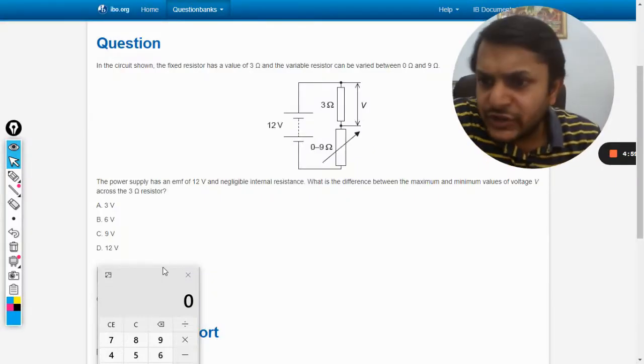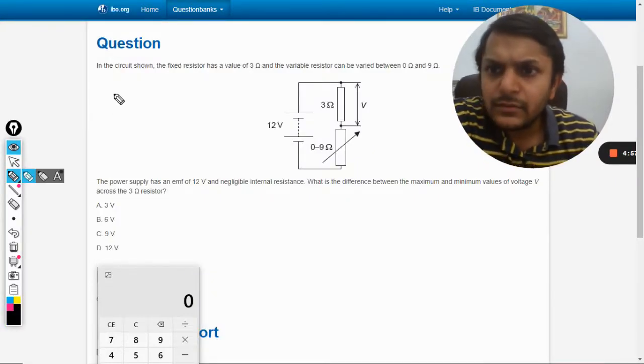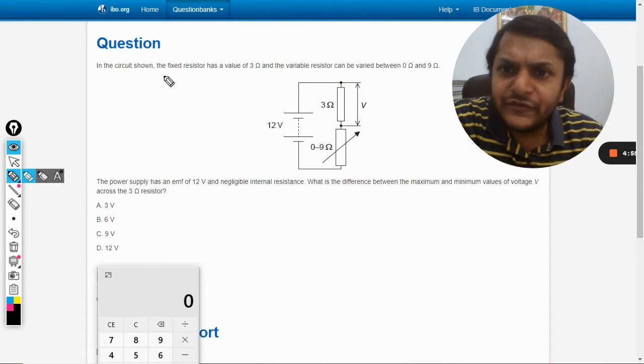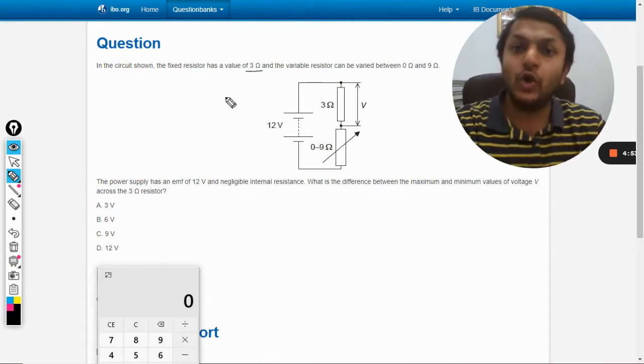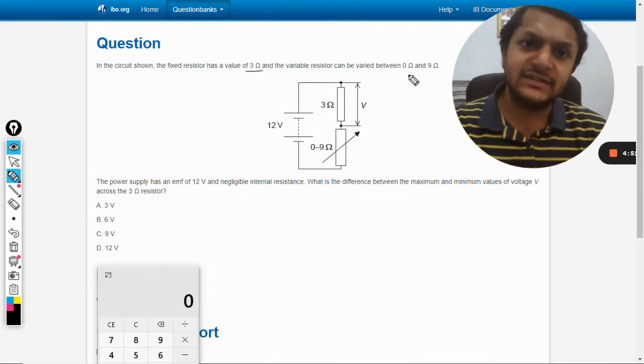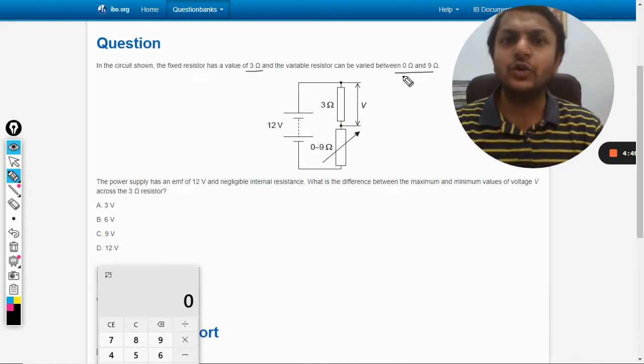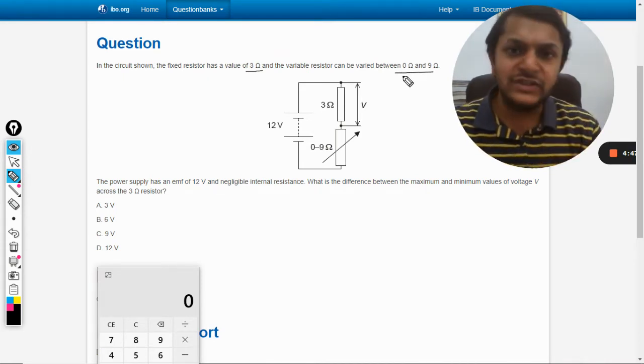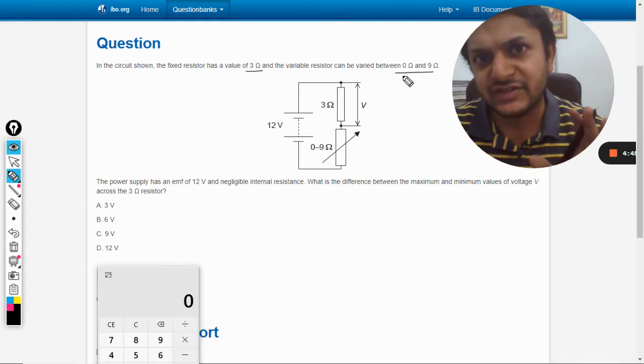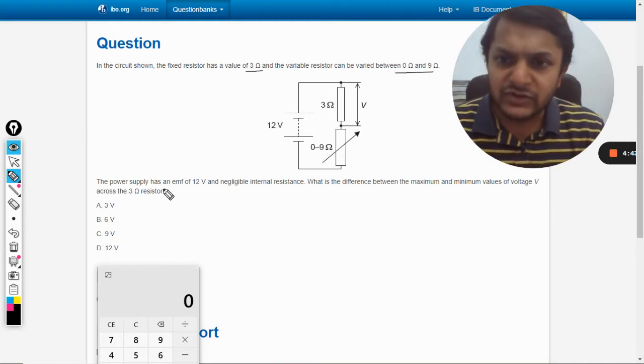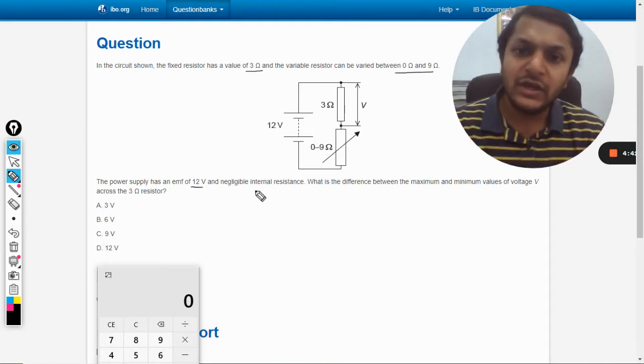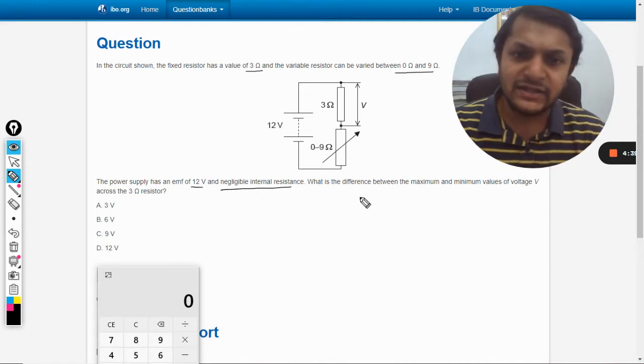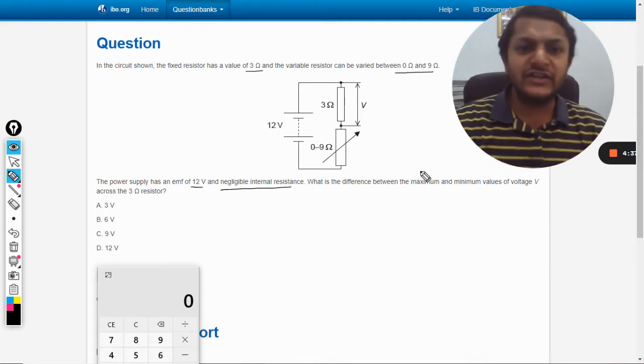Okay, so in this question, the circuit shown has a fixed resistor with a value of 3 ohms and a variable resistance that can be varied between 0 to 9 ohms. Both of these resistances are placed in series combination. The power supply has an EMF of 12 volts and negligible internal resistance.